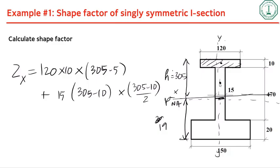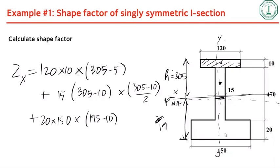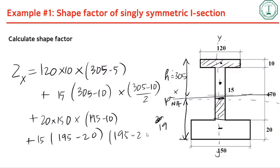The web contribution above the PNA is 15 times (305 minus 10) times (305 minus 10) over 2. For the bottom flange it is 150 times 20 times (195 minus 10), and the web below is 15 times 195 times (195 minus 20) over 2. Summing all terms gives Zx equal to 1.797 times 10 to the power 6 mm³.